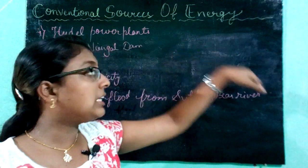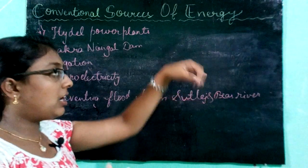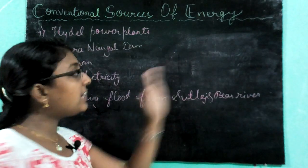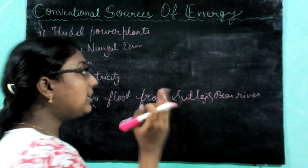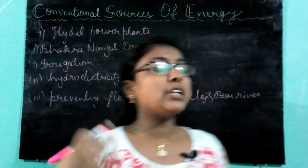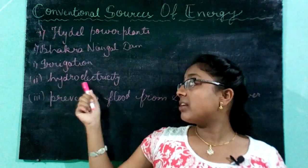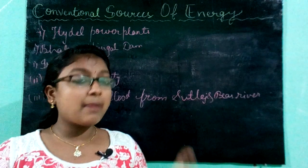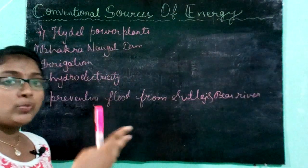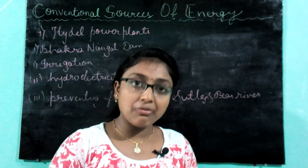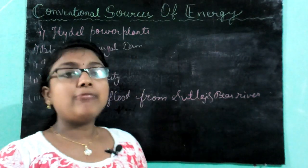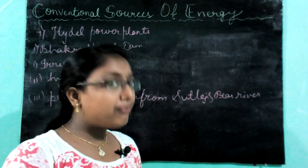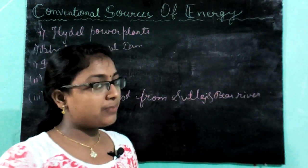Bhakra is located at a greater height than the Nangal Dam. When the gate of the dam is opened, water flows and is then controlled by the Nangal Dam — the turbine moves and hydroelectricity is generated. From the Bhakra canal system, water is distributed to Punjab, Haryana, and Rajasthan for irrigation. When heavy rainfall occurs and there is a chance of flood, the Bhakra Nangal Dam comes into action.